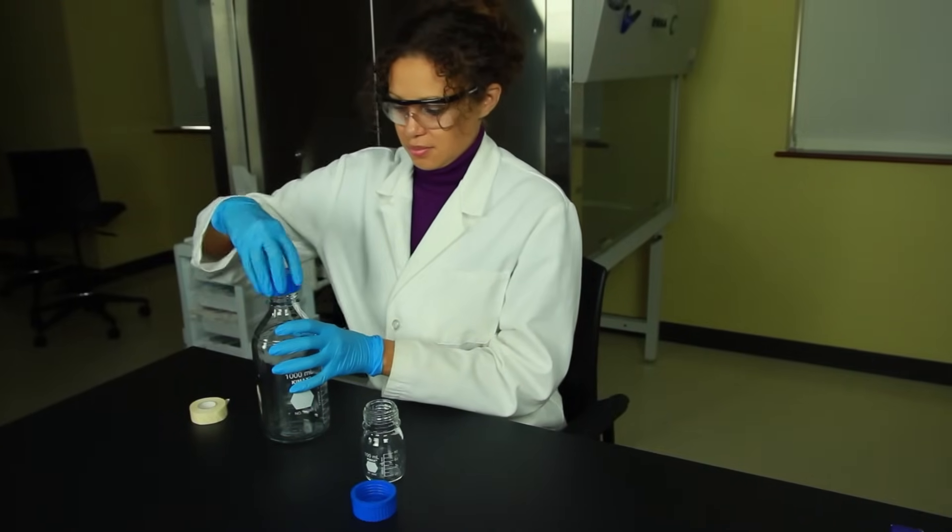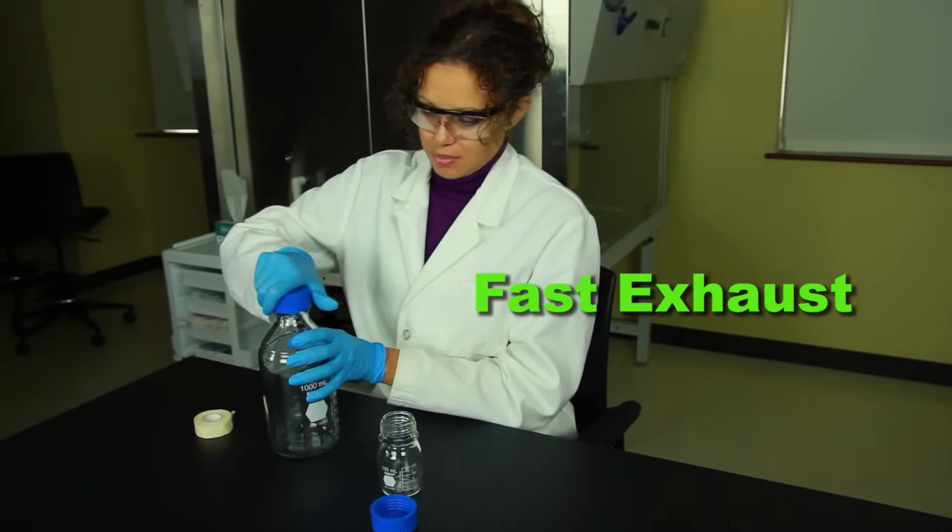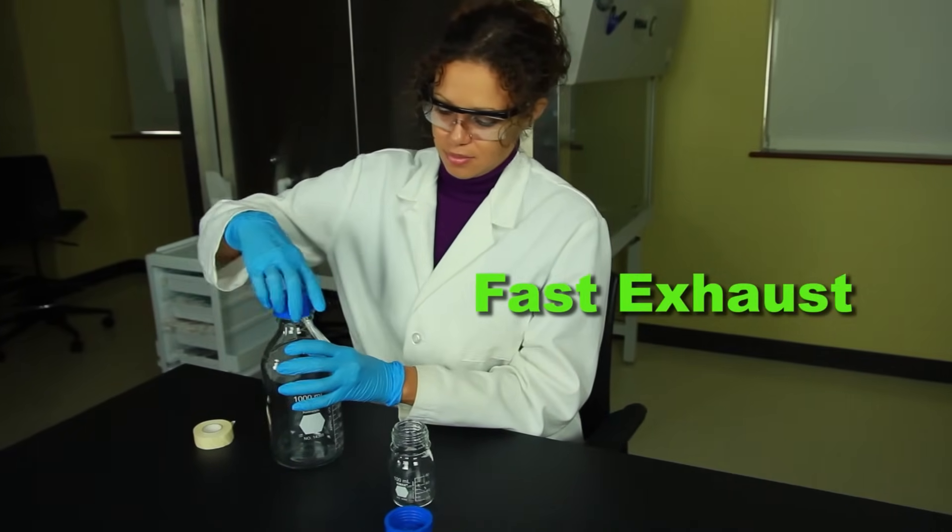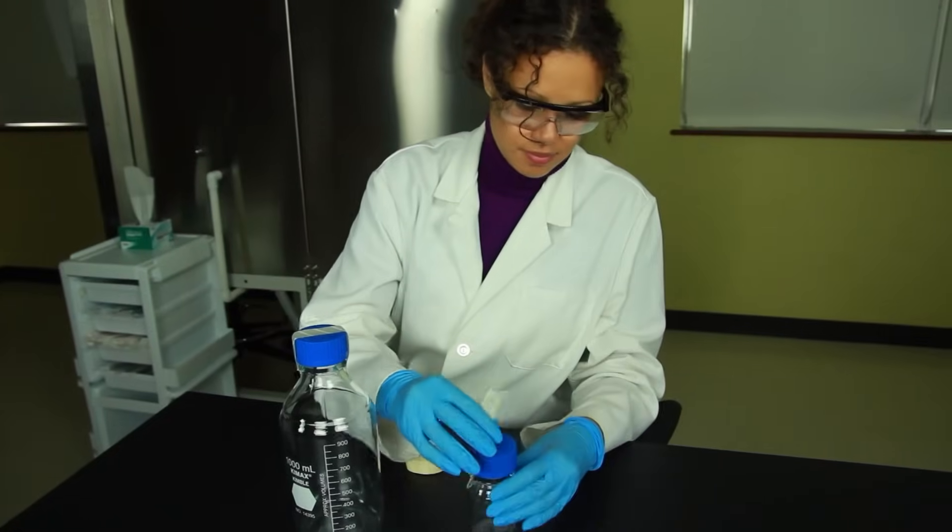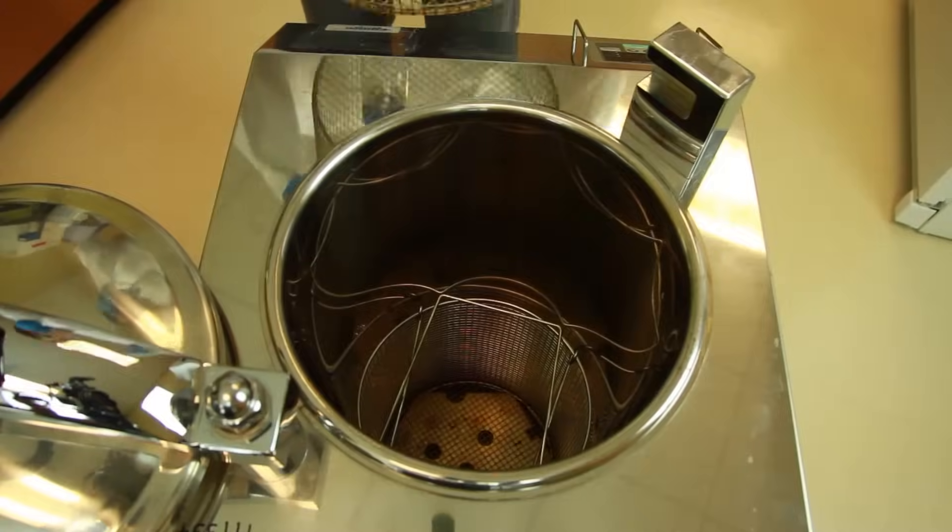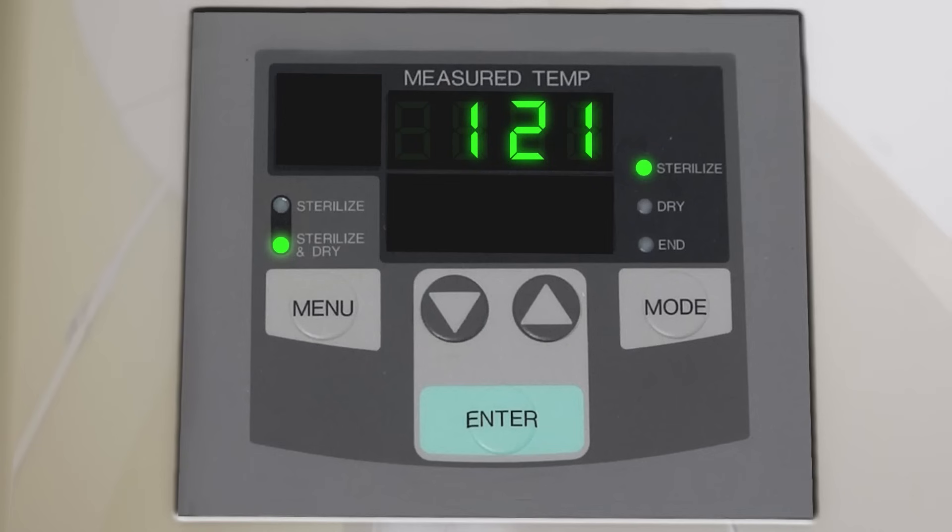Now let's run a second autoclave cycle, this time using the fast exhaust to sterilize some empty bottles. Tighten the cap but then loosen it about halfway. Place the autoclave tape over the lid and put the bottles into the basket.